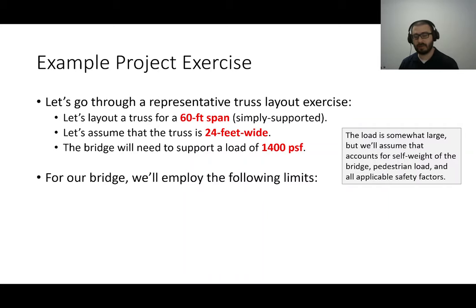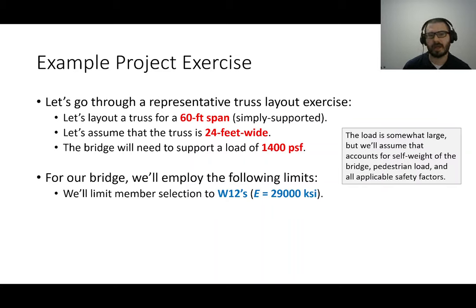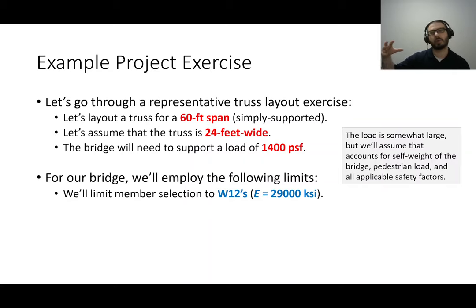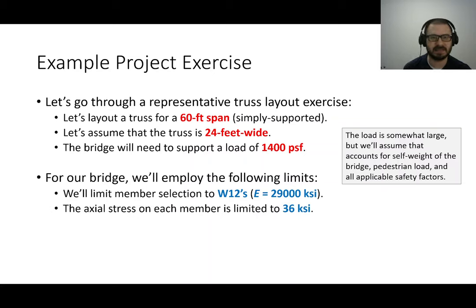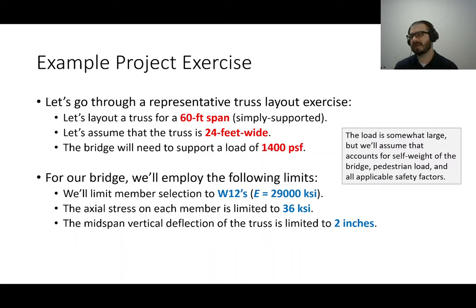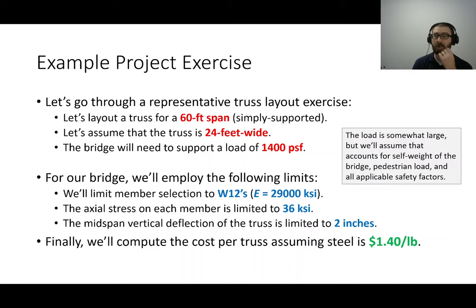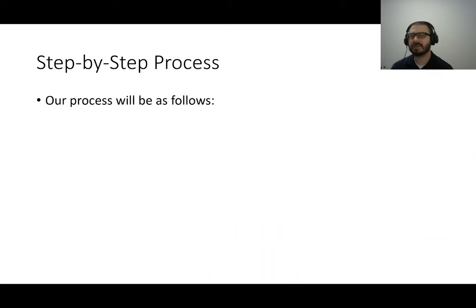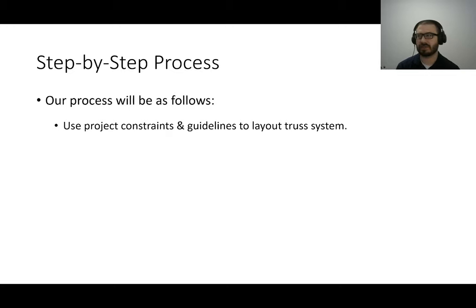In laying this truss out, we'll employ the following limits: member selection limited to W12s, Young's modulus of 29,000 KSI for steel, axial stress on each member limited to 36 KSI, and mid-span vertical deflection limited to two inches. We'll also compute cost per truss assuming steel costs about $0.40 a pound. Here's the process: use project constraints to lay out the truss system, use tributary area to determine joint loads, analyze the truss, use stress values to select members, then check vertical deflection limits.